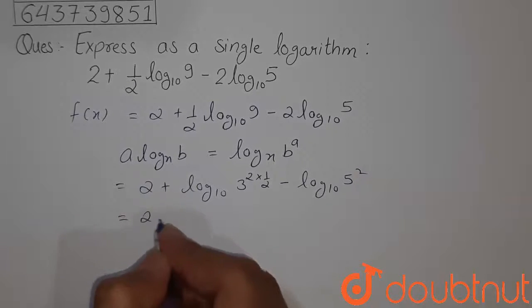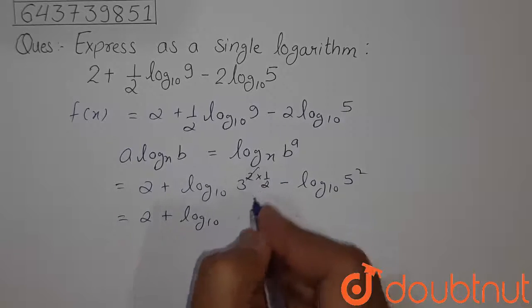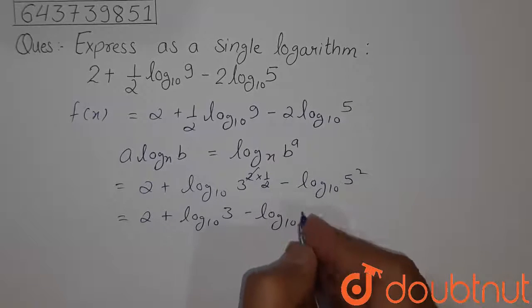So we can write it as 2 plus log to the base 10. So this power cancelled out giving 3 minus log to the base 10, since 5 square will be 25.